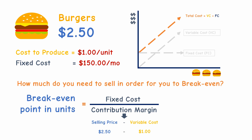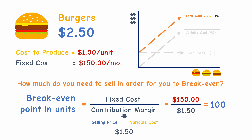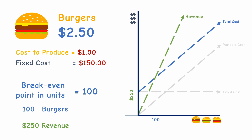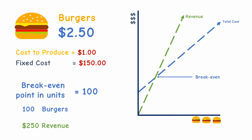In the given example, the contribution margin is calculated as follows: the selling price of two dollars and fifty cents minus the variable cost of one dollar gives us a contribution margin of one dollar and fifty cents. So the break-even point is calculated as: fixed cost of one hundred fifty dollars divided by the contribution margin of one dollar fifty cents, giving us a break-even point of 100 units. This means you need to sell 100 burgers, or generate 250 dollars in sales in a month, to break even and avoid losses.